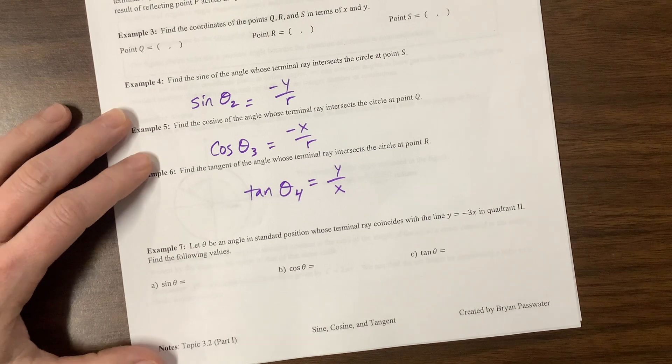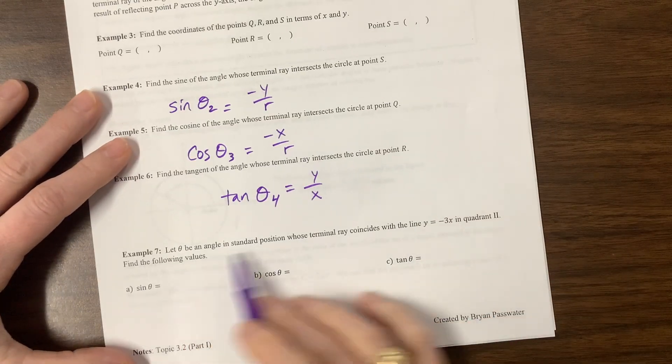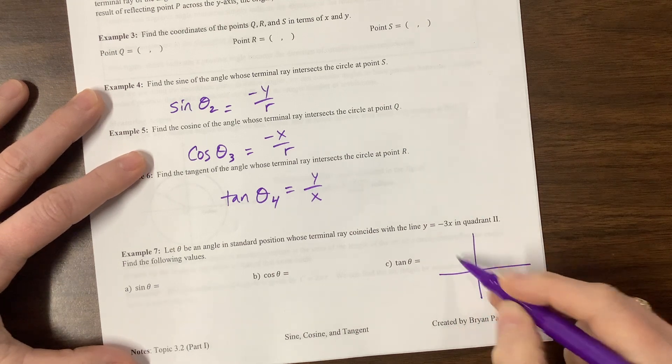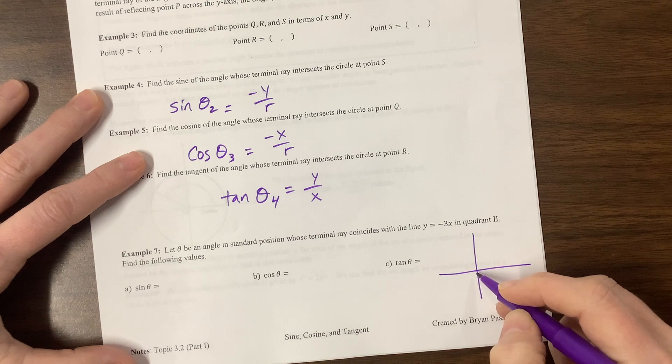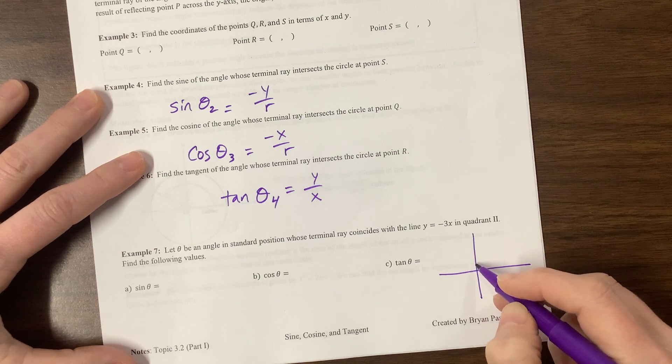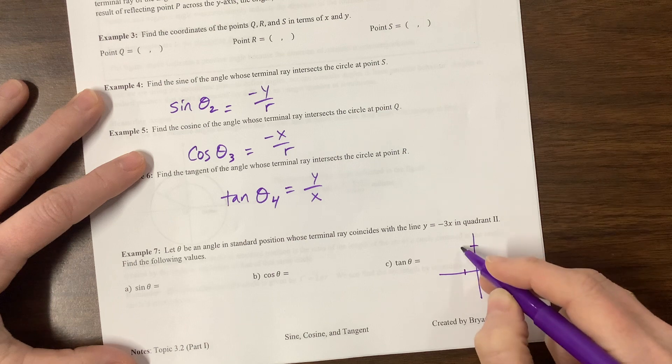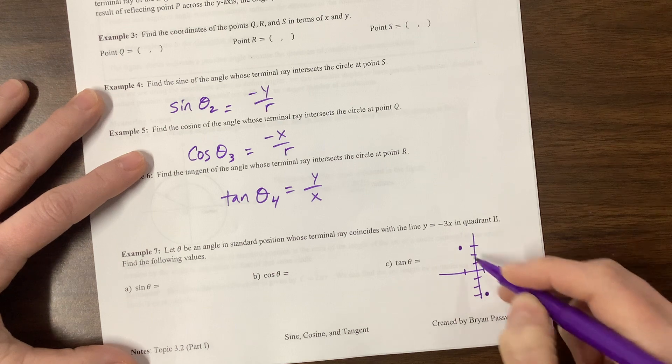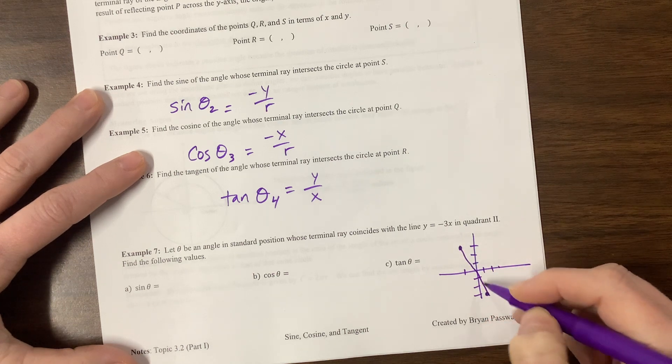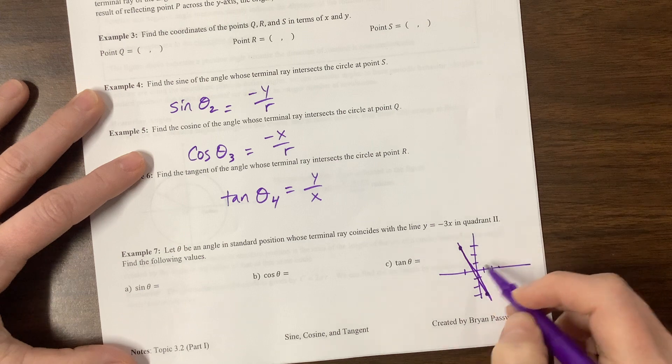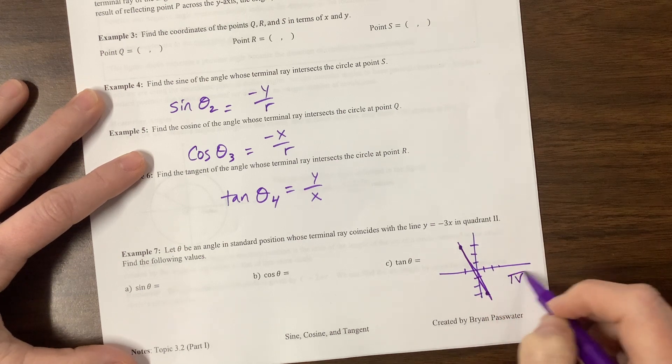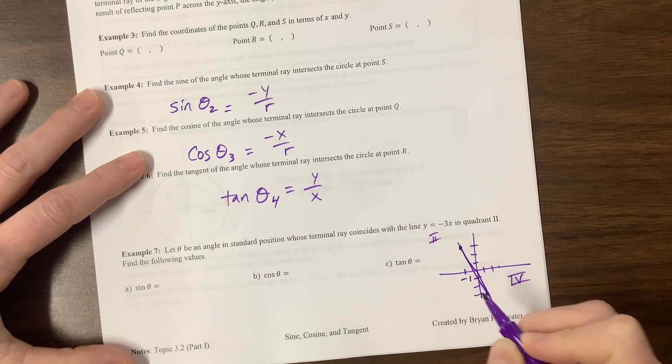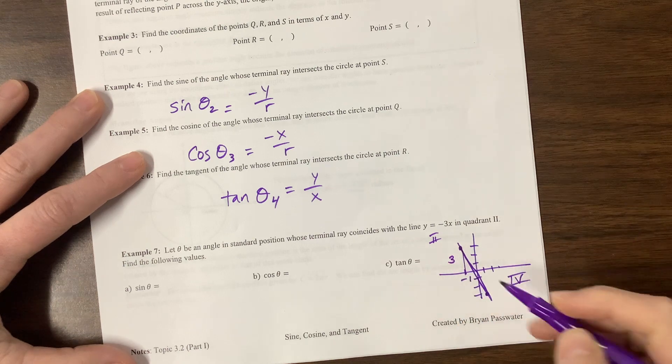Last one on this part. It tells us to let theta be the angle in standard position whose terminal ray coincides with the line. Y equals negative. So a negative three means over, rise over run. So one, two, three, and then back one. Or one, two, I lied. One, two, three, and over one. So we're looking at this line in quadrant two. I don't care about this part. My bad. This is quadrant four. We don't care. Quadrant two. In quadrant two, I went over. This is a positive. I lied. It's a negative one. And this is a positive three. And then we can do Pythagorean theorem. Three squared is nine plus one squared. Well, negative one squared is positive one, so ten. This becomes root ten.